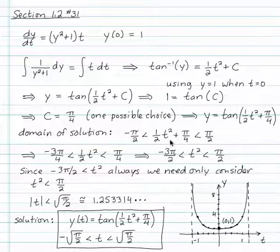We set 1 half t squared plus pi over 4 between minus pi over 2 and pi over 2. We choose that band because when t is equal to 0, we have to have pi over 4 between minus pi over 2 and pi over 2. There's our second choice.